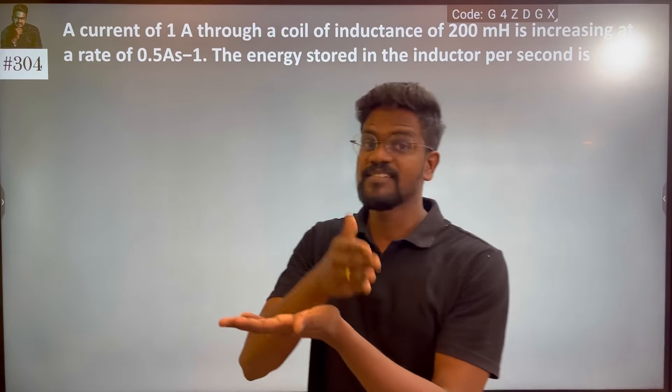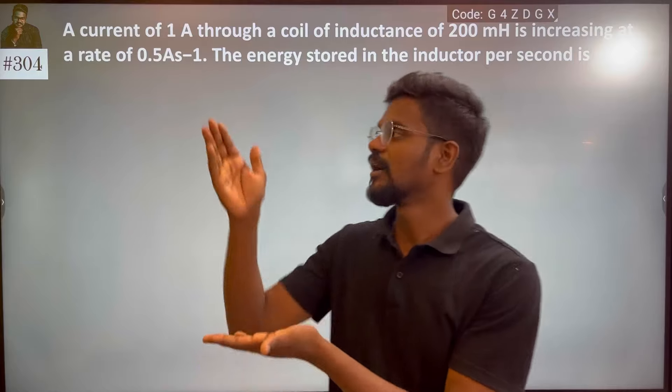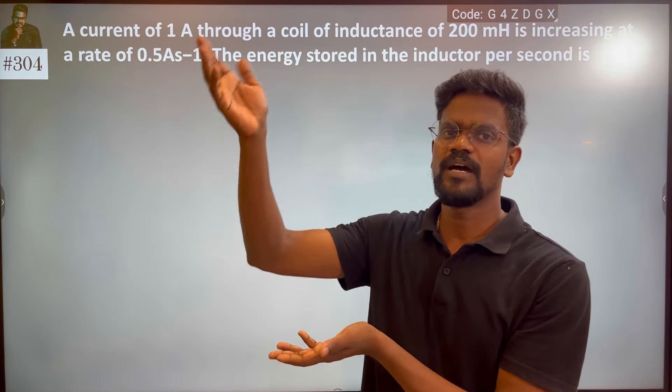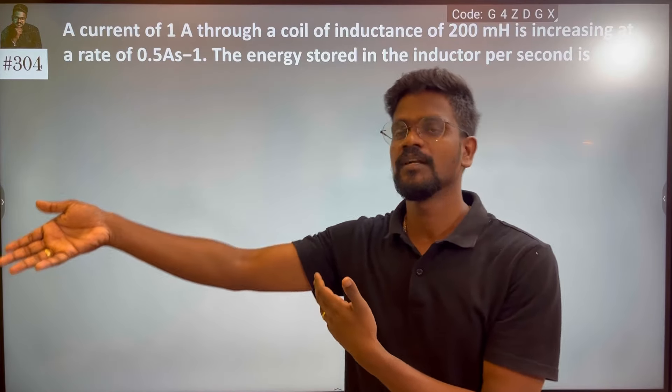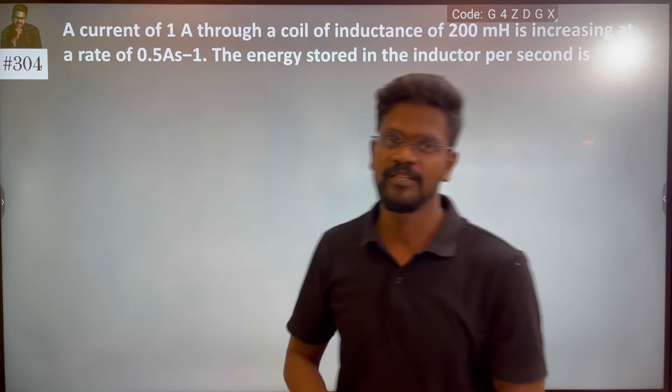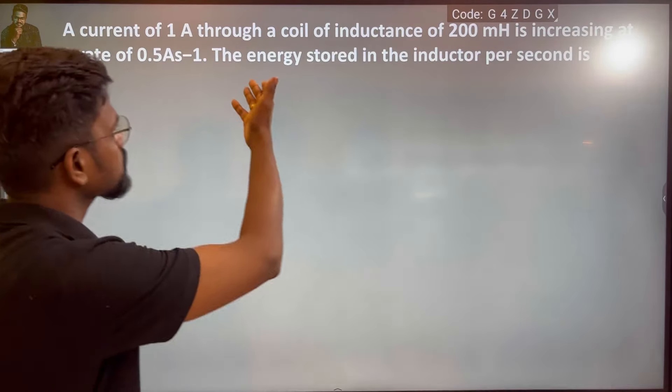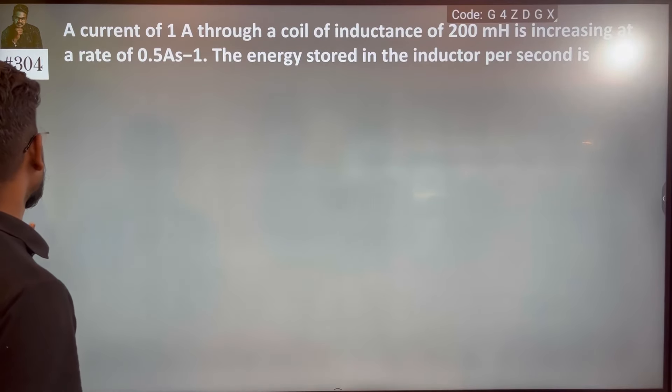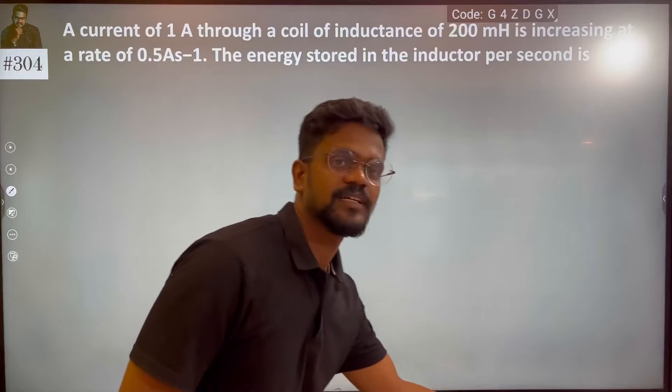Ampere per second, there is a change in current di by dt. The change in current is 0.5. The energy stored in the inductor per second. So, energy stored in inductor per second.